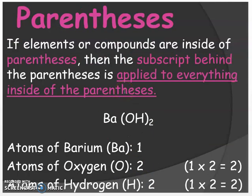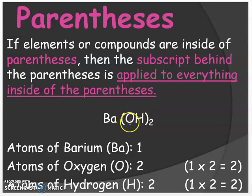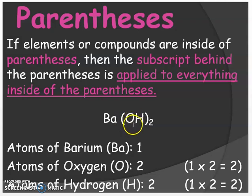The third rule is the parentheses rule. If elements are inside parentheses, then the subscript behind the parentheses is applied to everything inside. For example, in Ba(OH)2, oxygen and hydrogen are inside the parentheses, but barium is not. So the subscript of 2 outside the parentheses does not apply to barium — barium is just one atom. Oxygen is 1 times 2, giving two oxygens. Hydrogen is also 1 times 2, giving two hydrogens.